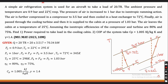The question: A simple air refrigeration system is used for an aircraft to take a load of 20 TR. The ambient pressure and temperature are 0.9 bar and 22°C respectively. The pressure of air is increased to 1 bar due to isentropic ramming action. The air is further compressed in a compressor to 3.5 bar and then cooled in a heat exchanger to 72°C. Finally, air is passed through the cooling turbine and then it is supplied to the cabin at a pressure of 1.03 bar. The air leaves the cabin at a temperature of 25°C. Assuming the isentropic efficiencies of the compressor and turbine are 80% and 75% respectively.